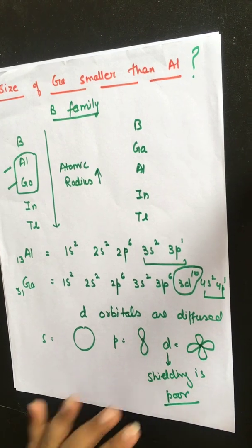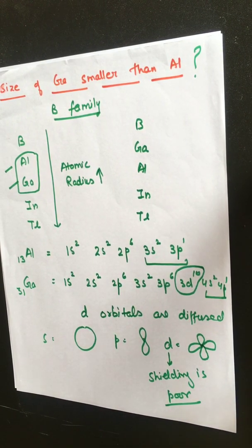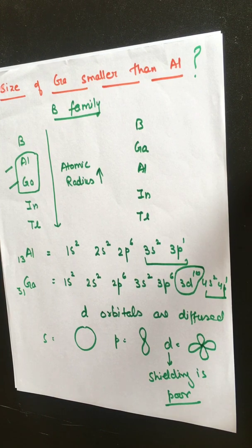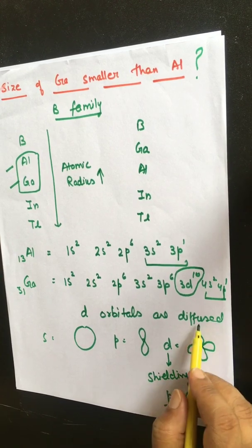Because the d-orbital is diffused and its electrons are far apart, the shielding effect of d-electrons is poor. Shielding is poor because of the diffused nature of d-orbitals — when electrons are spread far apart, they obviously cannot shield the nucleus effectively. So d-electrons shielding effect is poor.